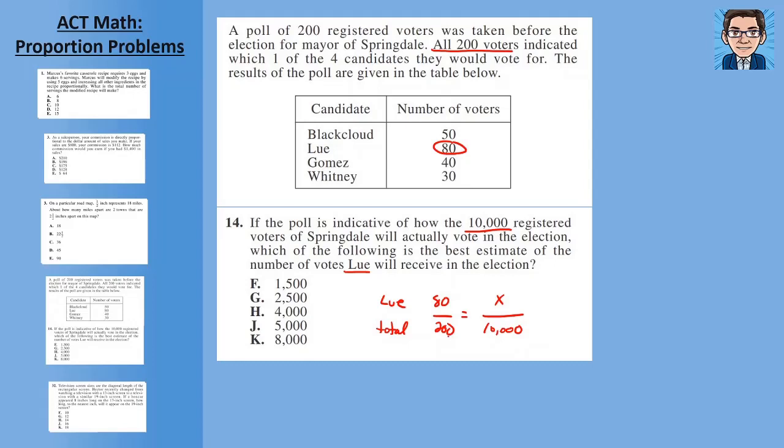Then we can just cross multiply. If you wanted to cancel, you could. You could cancel 200 into 10,000 to make the math easier. Or we just cross multiply 200x equals 800,000. Divide by 200 on both sides and you get x equals 4,000.